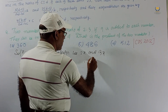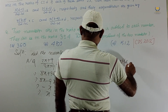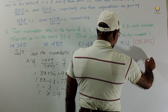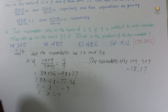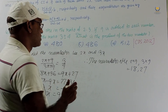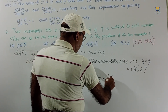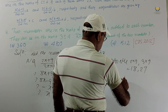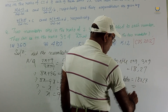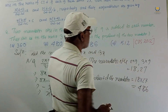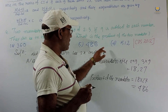Therefore the two numbers are 2 × 9 = 18 and 3 × 9 = 27. The product of the two numbers = 18 × 27 = 486. So option C is the correct answer.